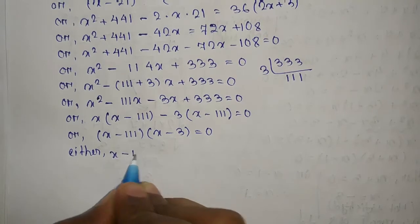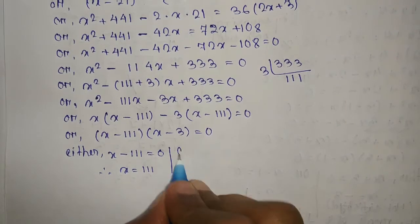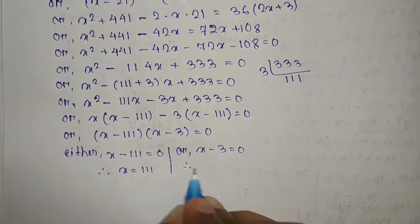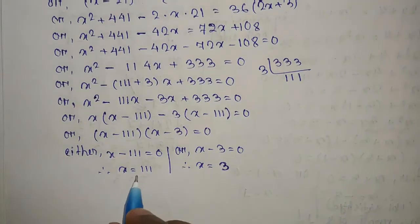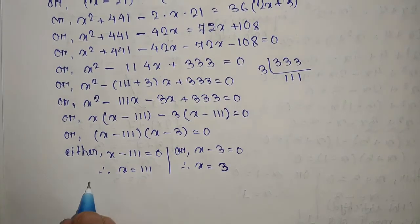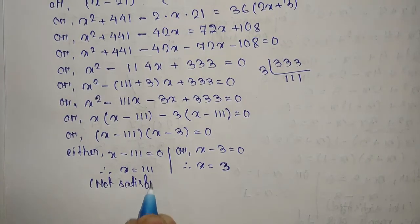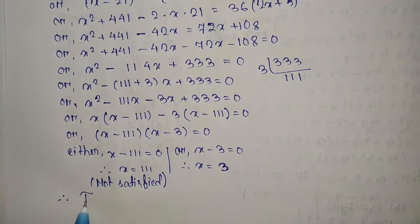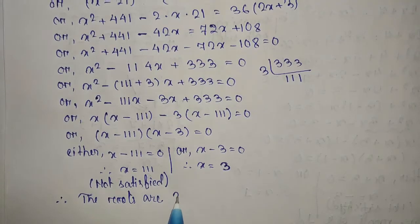From (x minus 111) = 0 or (x minus 3) = 0, we get x = 111 or x = 3. If we substitute x = 111 into the original equation, it is not satisfied. Therefore the only valid root is x = 3.